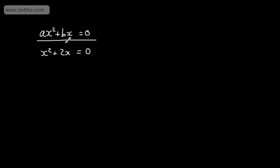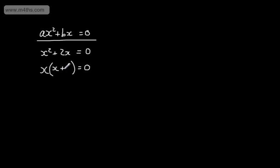If we have a quadratic equation in this form, we set one side equal to zero. In this particular case, the right-hand side is set to zero. On the left, we look to factor out the common factor. The common factor of x squared plus 2x is x. We take that out and ask: what do I need to multiply x by to get x squared? The answer is x. What do I need to multiply x by to get plus 2x? The answer is plus 2. Alternatively, x squared divided by x is x, and positive 2x divided by x is plus 2.